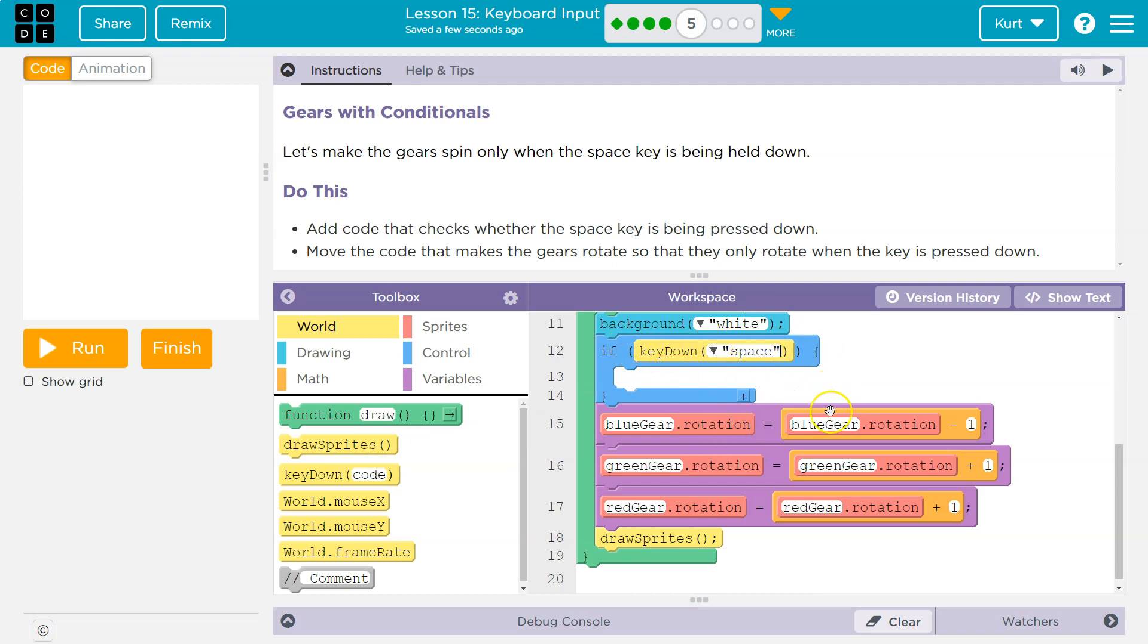So if the space key is down, what do we want to have happen? Whatever code we put inside of this blue mouth thing is the code that will run if the key is down.